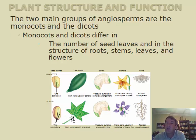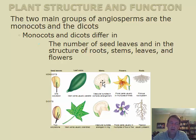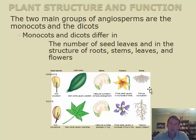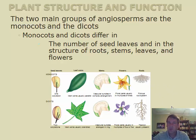The arrangement of vascular tissue inside the stems also differs. In monocots, vascular bundles are scattered throughout the stem, while in dicots they form a ring around the inside of the stem. Flower parts differ too — monocots typically have multiples of three petals, while dicots have multiples of four or five. Finally, root patterns differ: monocots have a fibrous root system and dicots have a distinct taproot.